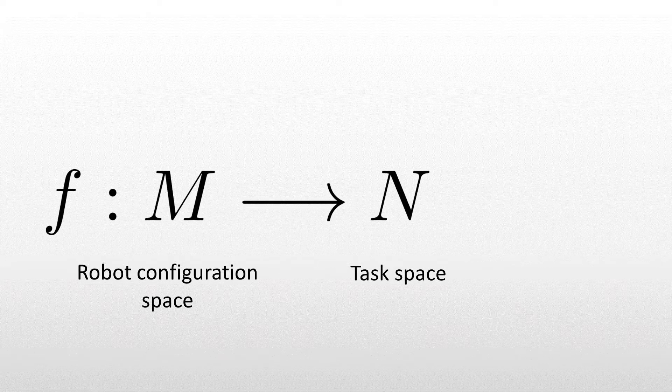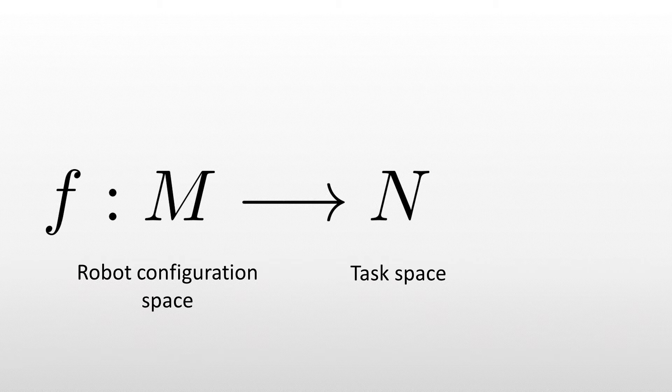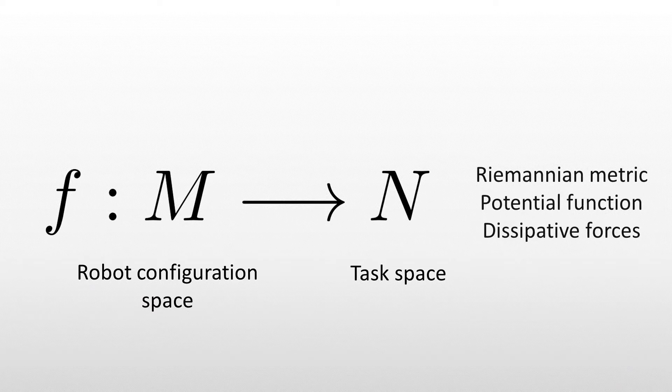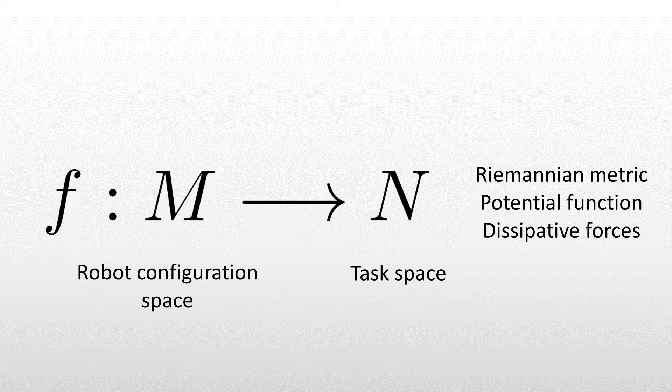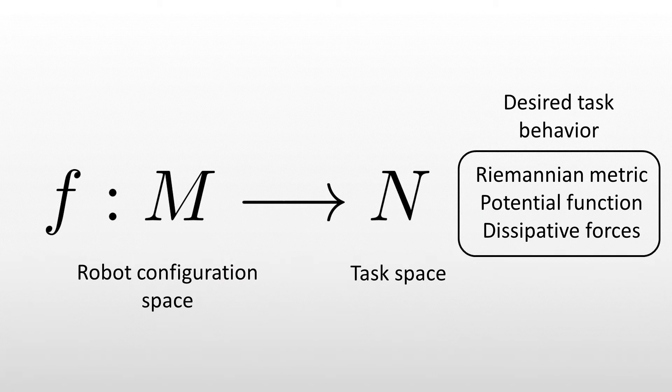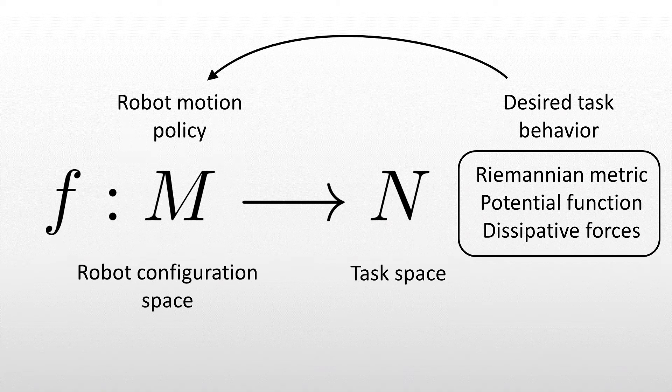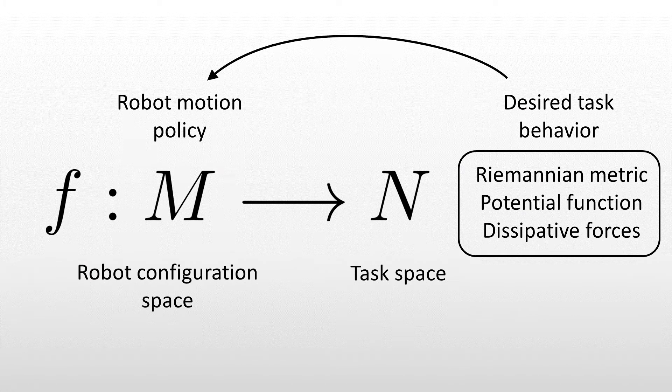At a high level, our approach is to consider task maps from the robot configuration manifold to task manifolds. On these task manifolds, we design a Riemannian metric and, if desired, a combination of potential and dissipated forces. These define desired task behaviors, which can then be pulled back through the task map to extract corresponding robot behavior.